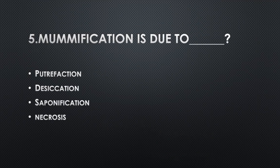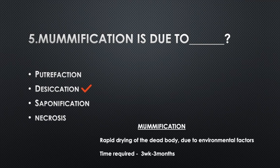Mummification is due to — Option A: Putrefaction, Option B: Desiccation, Option C: Saponification, Option D: Necrosis. Answer: Option B, Desiccation. Mummification is a rapid drying of the dead body due to environmental factors. Time required: 3 weeks to 3 months.